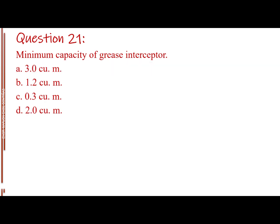Question number 18, minimum distance of a trap diameter. Letter A, 3.0 cubic meters, letter B, 1.2 cubic meters, letter C, 0.3 cubic meter, letter D, 2.0 cubic meters. The answer is letter A, 3.0 cubic meters.